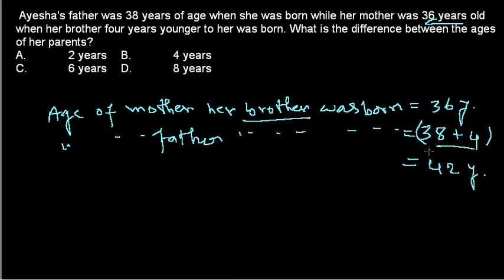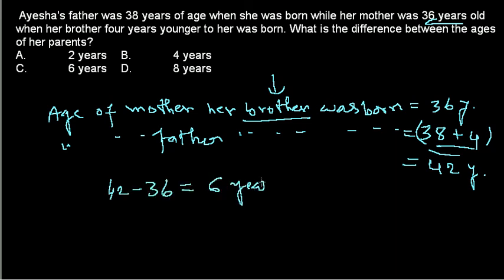That is the only jugglery of words in this particular problem. Once you find that, you know that at the birth of Aisha's brother, her mother was 36 years old and her father was 42 years old. So the age difference between them is 42 minus 36 equals 6 years. And here we go — Option C is the correct answer.